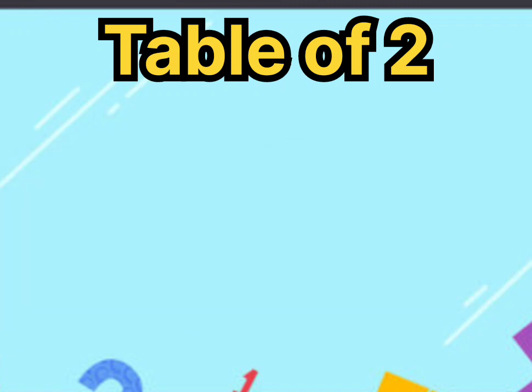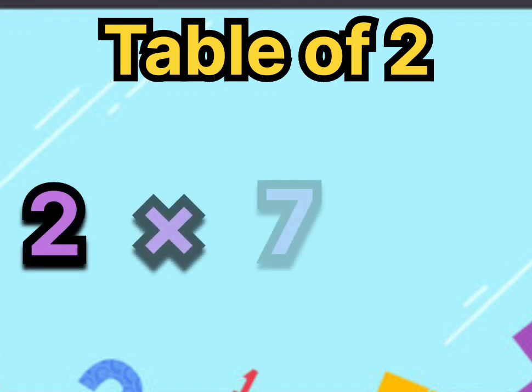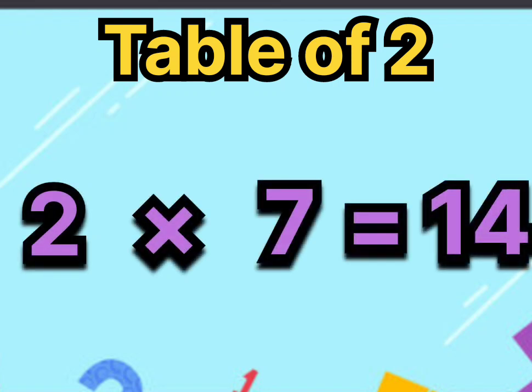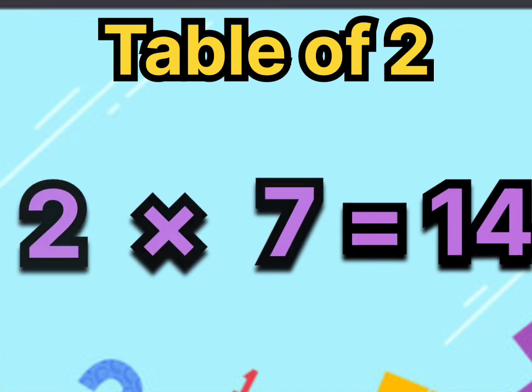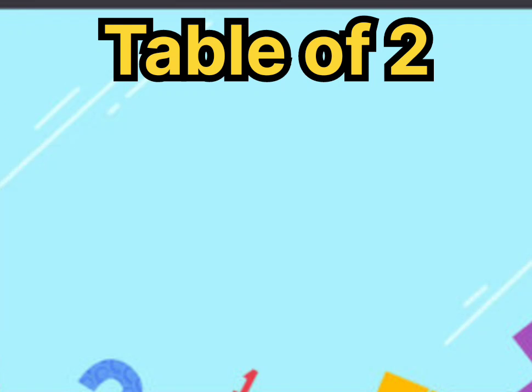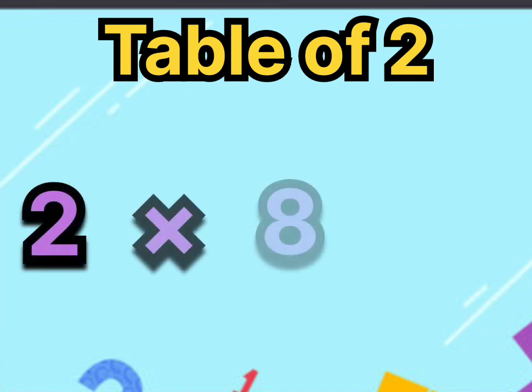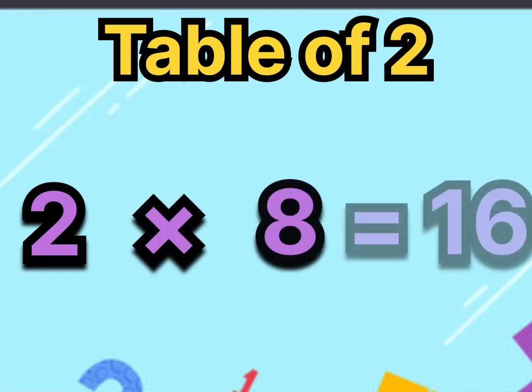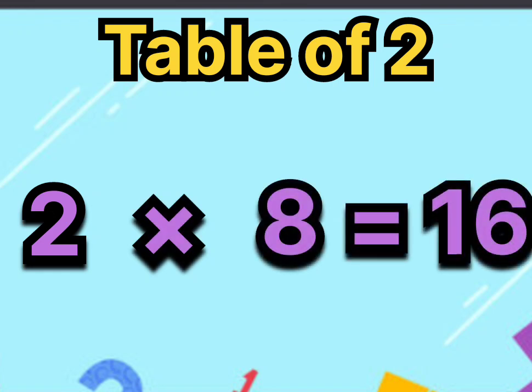Two sevens are fourteen. Say it again, two eights are sixteen. Two, eight, sixteen.